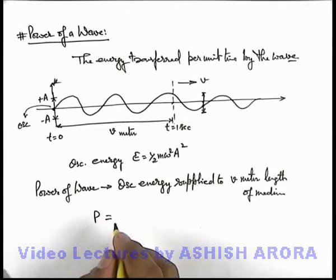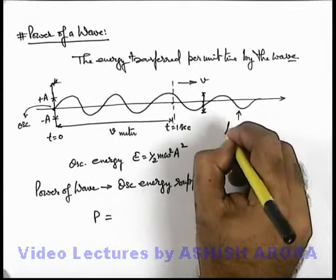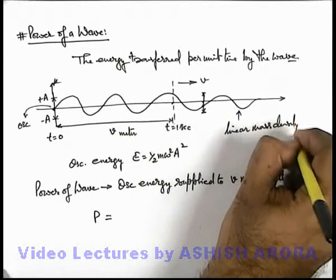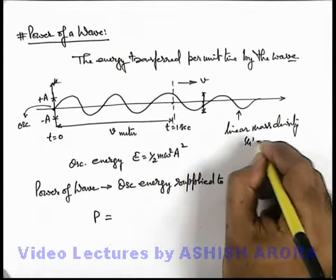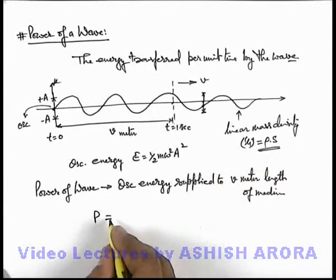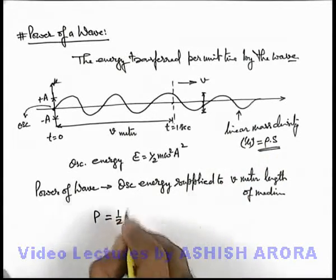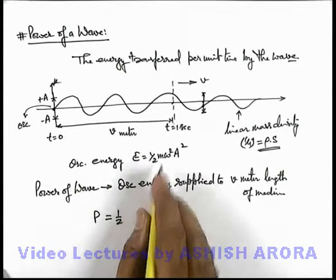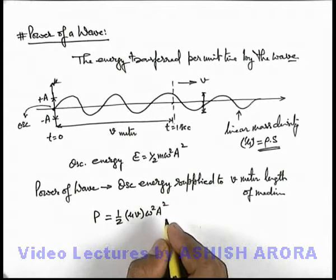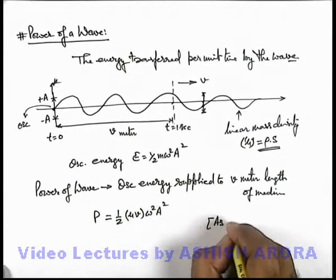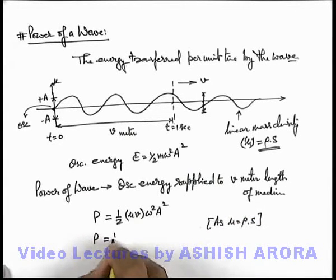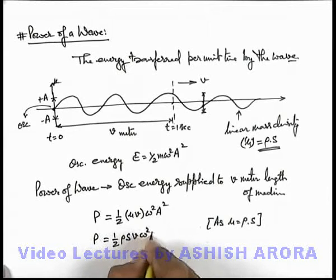So we can directly write this power. If the mass per unit length of the medium is taken as mu, which is generally written as density multiplied by the cross-sectional area, then the wave power can be written as the total energy of v meter length, which will have a mass given as mu times v, multiplied by half omega squared A squared. Substituting the linear mass density as density times cross-sectional area, this power can be written as half rho S v omega squared A squared.